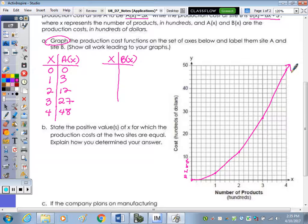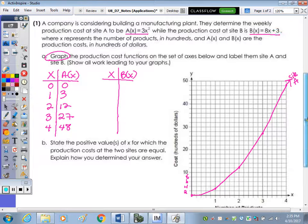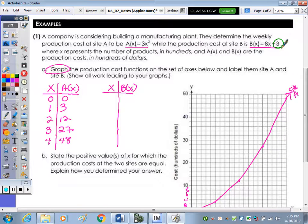So I'm going to label this, you could call it A(x) and write the equation, but I'm going to call it site A. And now I'll graph the linear function in green. So based on the equation, we can see we have a Y intercept of 3. So your first point is (0,3). Plugging in a 1, 8 times 1 is 8, plus 3 is 11, so (1,11).